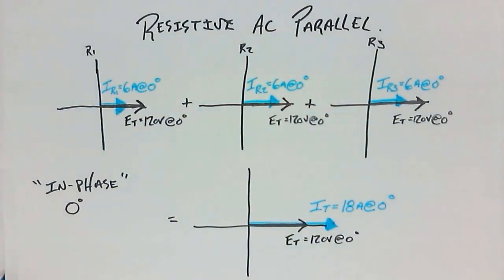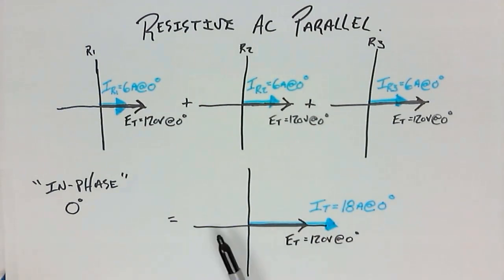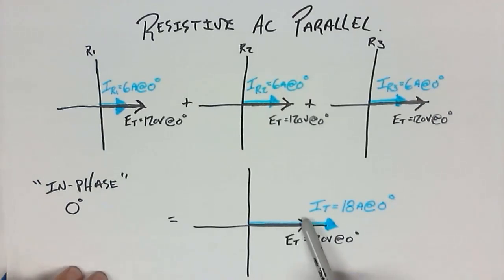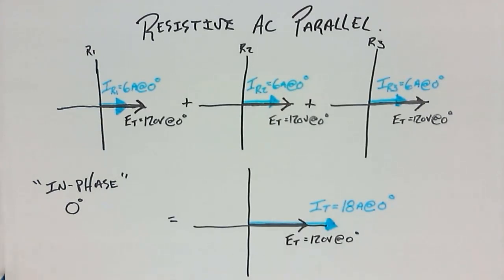In a resistive AC parallel circuit, there is no out-of-phase component or shifting of the values of voltage or current. They are in phase with one another, which means they are drawn both on the reference line. What is different between series and parallel is that in parallel, the reference is now the voltage — it's no longer the current. Voltage of the source is the reference.